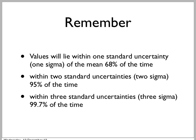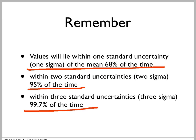Remember, this means that if you say something is 10 plus or minus 1, it doesn't mean everything will be in the range of 9 to 11. If you remember the figures from our Gaussian, you will lie within one standard uncertainty of the mean 68% of the time, within two standard deviations 95% of the time, and within three standard deviations 99.7% of the time.